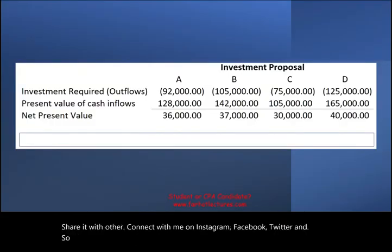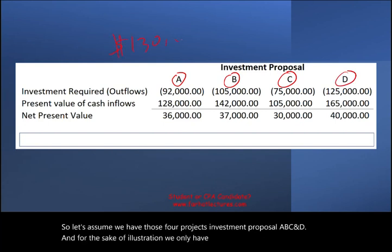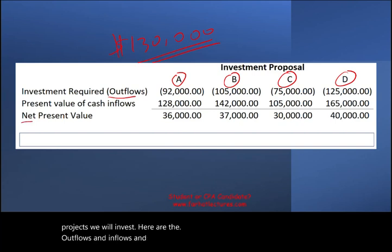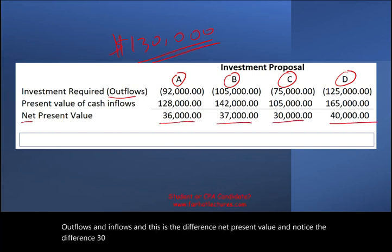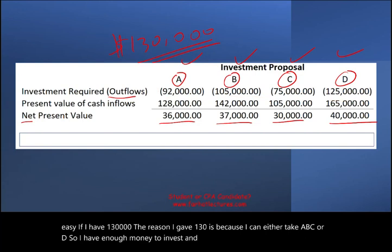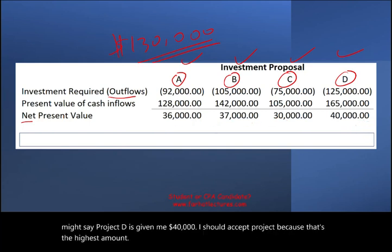Let's assume we have four investment proposals — A, B, C, and D — and we only have $130,000 to invest. Here are the outflows and inflows for each project, and the differences — the net present values — are $36,000, $37,000, $30,000, and $40,000 respectively. At first glance, you might say project D gives the highest NPV of $40,000 and should be chosen, but you have to be careful.